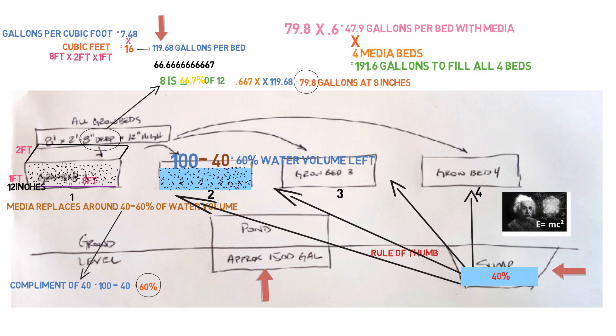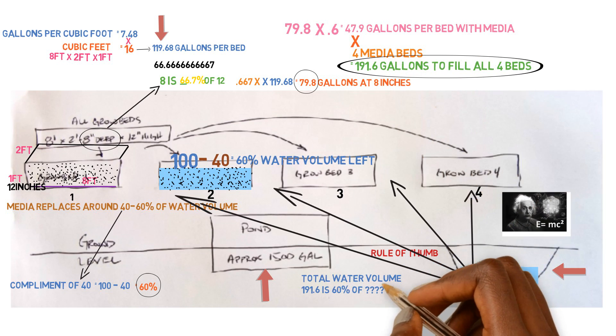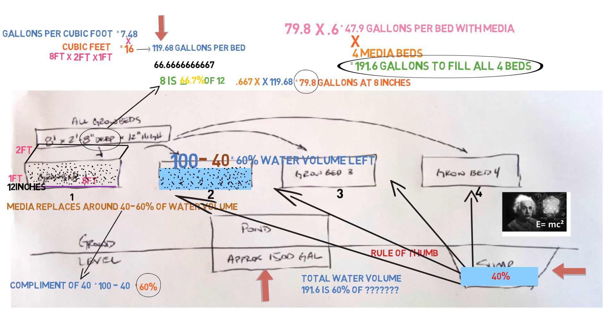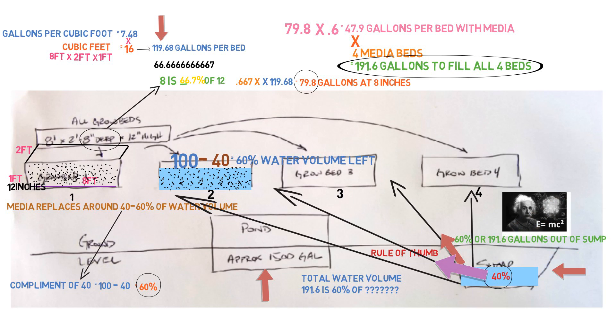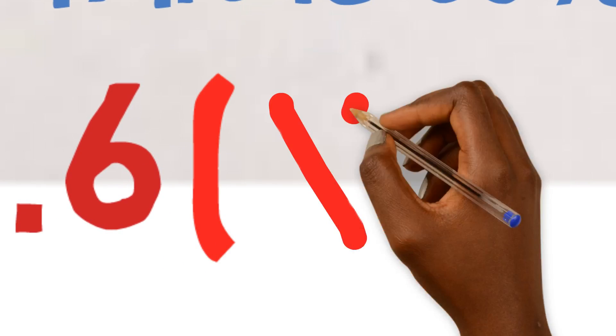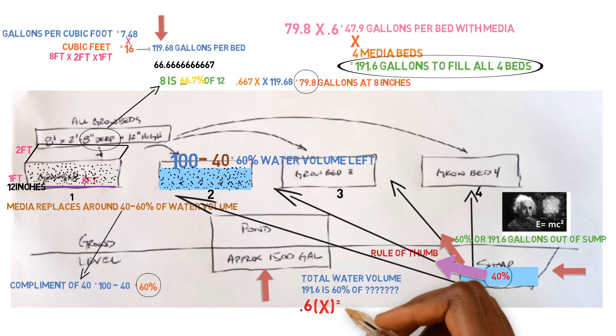We're getting our Einstein E equals MC square on today. So in order to find out what size sump we need, basically what we, the equation basically comes down to this, the total volume of all the water getting dispersed into the beds, which is the 191.6 gallons is 60% of what number. And it's 60% because that's saying when we take it all out, we're taking 60% of the water volume out to go into those beds, which leaves us with 40% minimum. That's what that leaves us with. You can rearrange this number depending on how much your minimum amount of sump tank you want left, but we're going to do 40%. So 191.6 is 60% of what number? So basically to break this down, we'll take our 60% and we'll convert that into a decimal, which is 0.6 multiplied by X.